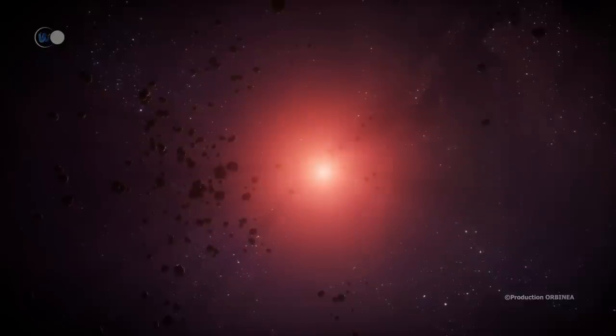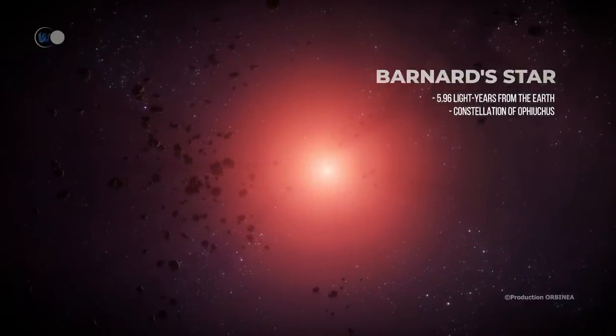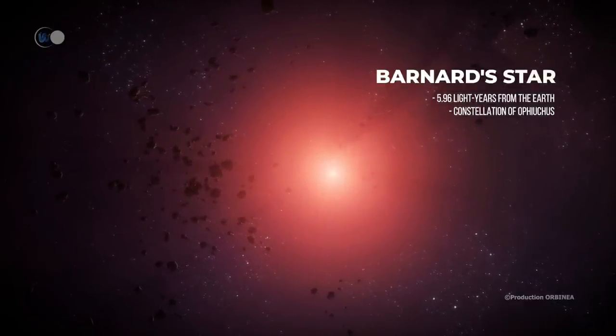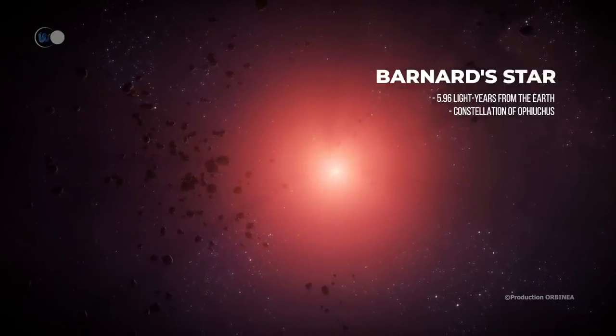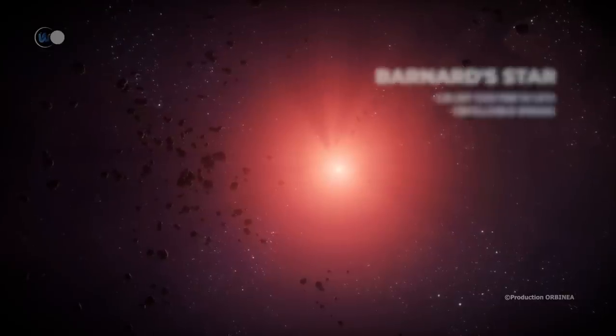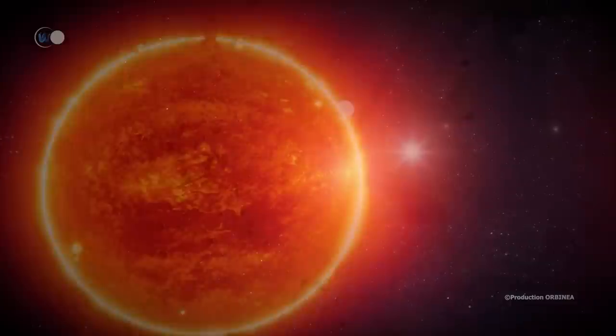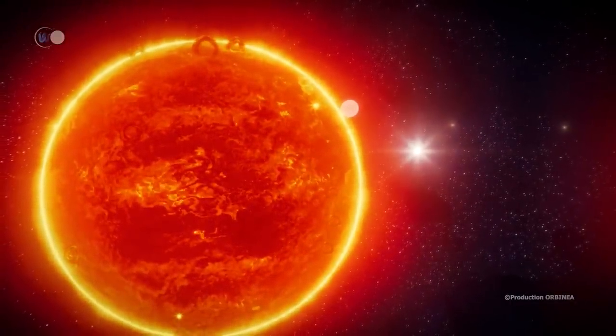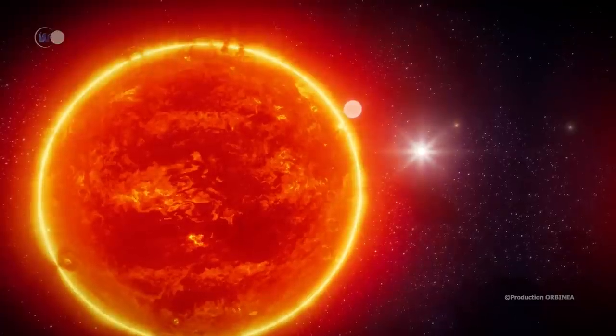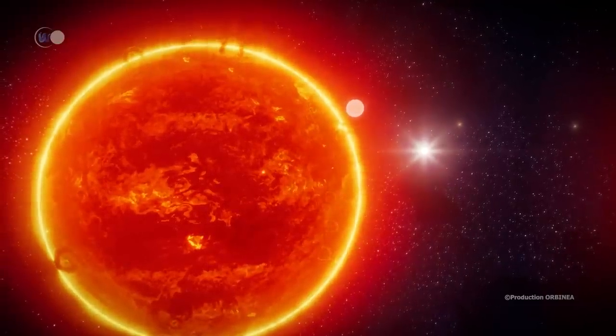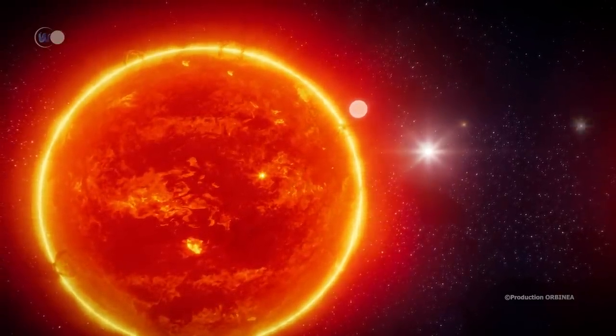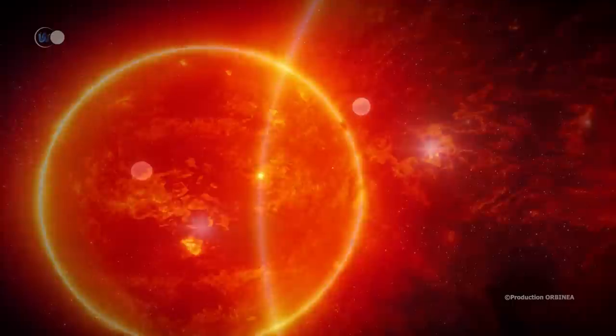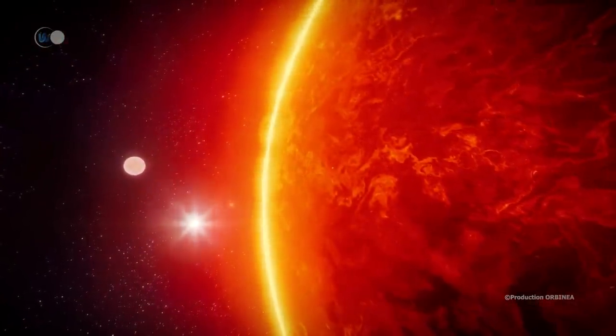Let's start with Barnard's star, which is located a little further away, in the constellation of Ophiuchus, 5.9 light-years from our Sun. Despite its proximity to our solar system, its low luminosity prevents its observation without a telescope. Indeed, it is a red dwarf, of spectral type M4.